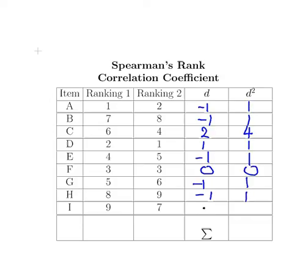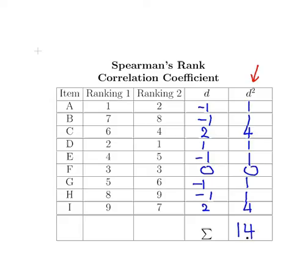And lastly, 9 minus 7 = 2, squared = 4. Now we sum up all the values in the D² column: 1 + 1 + 4 + 1 + 1 = 8 so far, then plus 1 + 1 + 4 = 14 altogether. So the sum of D squared is 14.